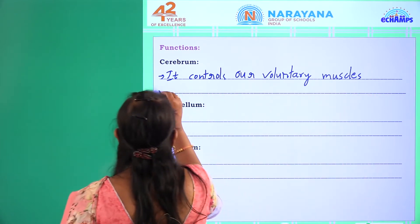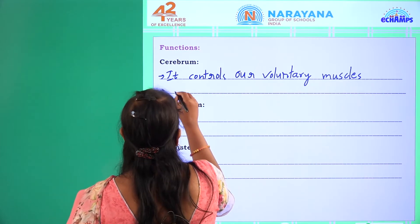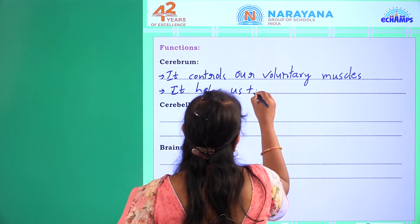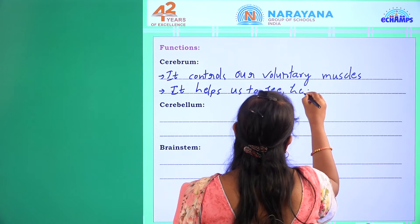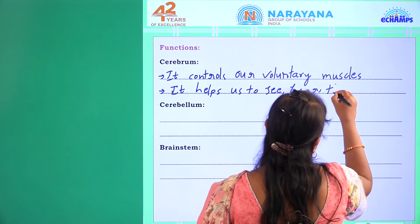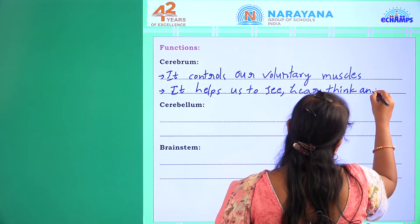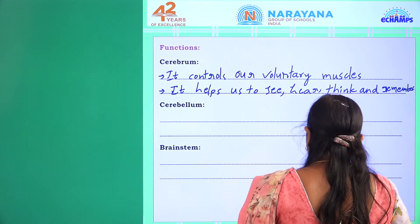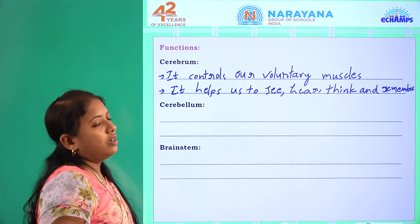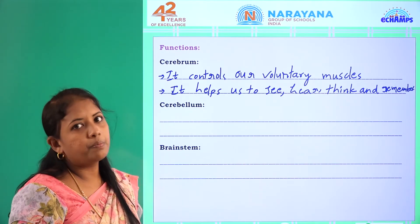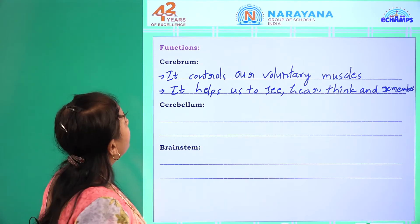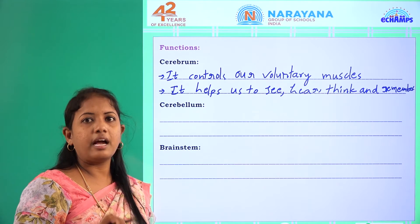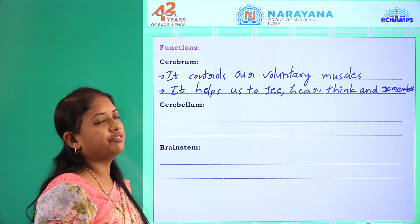The second point is it helps us to see, hear, think and remember. Not only this, it is also very helpful in solving maths problems or running in the field. One more important point is that the cerebrum controls all feelings such as sadness and fear. These are some important functions of the cerebrum.